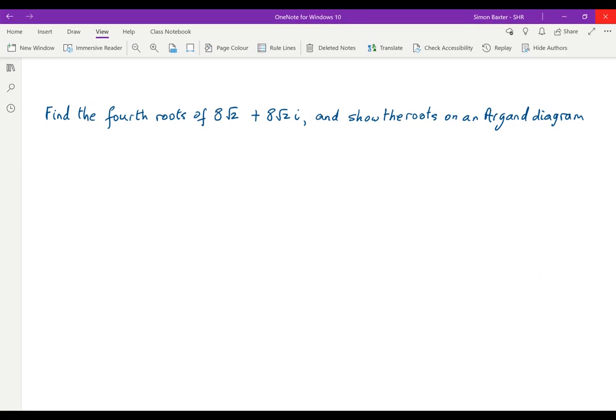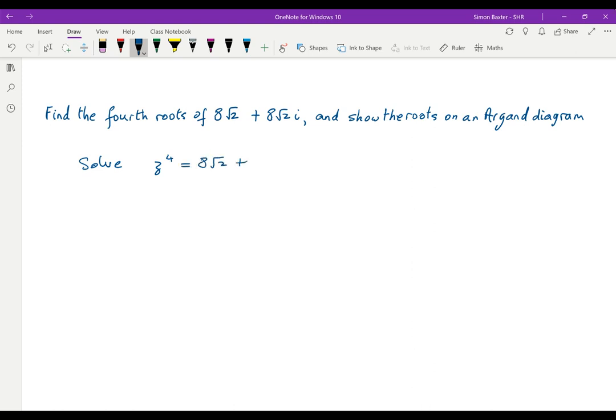This is equivalent to solving the equation z⁴ = 8√2 + 8√2i. Well first of all let's start with z = r(cos θ + i sin θ), which is the same as re^(iθ).